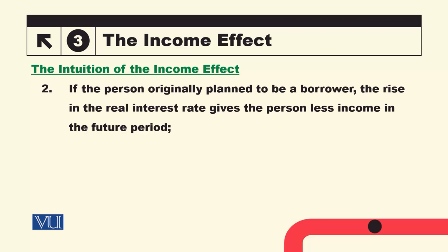If the person originally planned to be a borrower, the rise in the real interest rate gives the person less income in the future period. Net borrower کا مطلب یہ ہے کہ current period میں جو available resources ہیں اس سے وہ زیادہ spend کر رہا ہے — borrow کر کے۔ اس صورت میں interest rate کے بڑھنے سے اس کے پاس available resources کم ہو جائیں گے کیونکہ اس نے زیادہ interest pay کرنا ہے، تو وہ relatively poor ہو جائے گا اور اس کی current consumption اور future consumption دونوں کم ہو جائیں گی۔